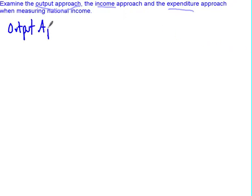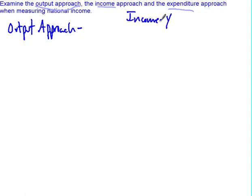The output approach is one that we typically won't use in testing, but it is one of the methods out there. Remember from the circular flow: income is Y, the expenditure approach is E, and the output approach is O.